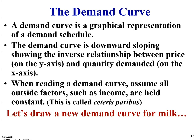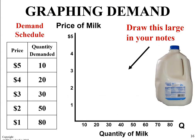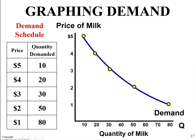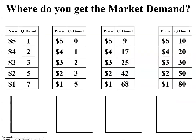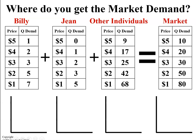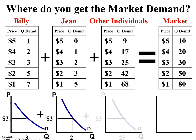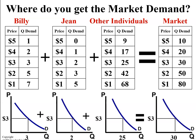Let's draw a new demand curve for milk. Draw this graph, and each price and quantity is a point, so you should get a demand curve that looks like this. Where do we get the market demand? Let's assume we have a demand schedule for Billy, a demand schedule for Gene, and a demand schedule for other individuals. The sum of these demand curves equals the market demand, illustrated in the graph below.